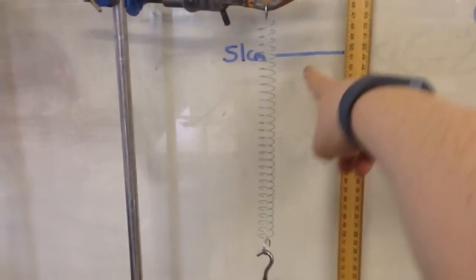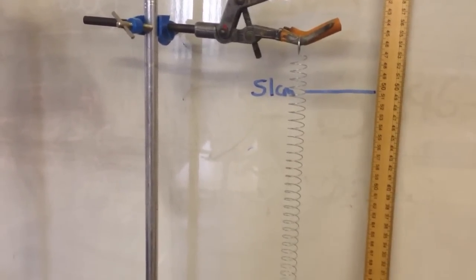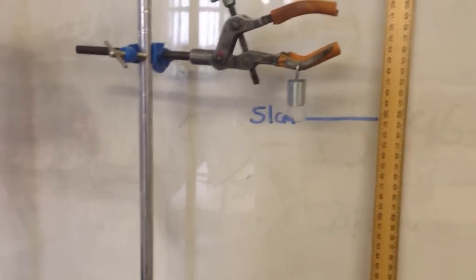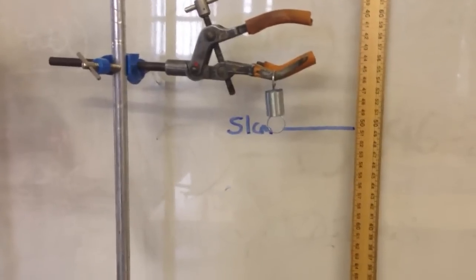4 newtons and 5 newtons. So you can see this is where the unextended spring was and this is where the spring has ended up and this is the measurement you need to take. I'll actually take that off because I know that 5 newtons is the extent that spring can stretch to and I don't want it to hang.